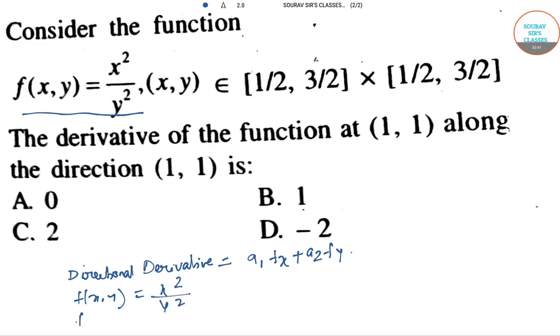Computing the partial derivatives: fₓ = 2x/y², and fᵧ = -2x²/y³. The direction vector components a₁ and a₂ are both 1, and the point is (1,1).